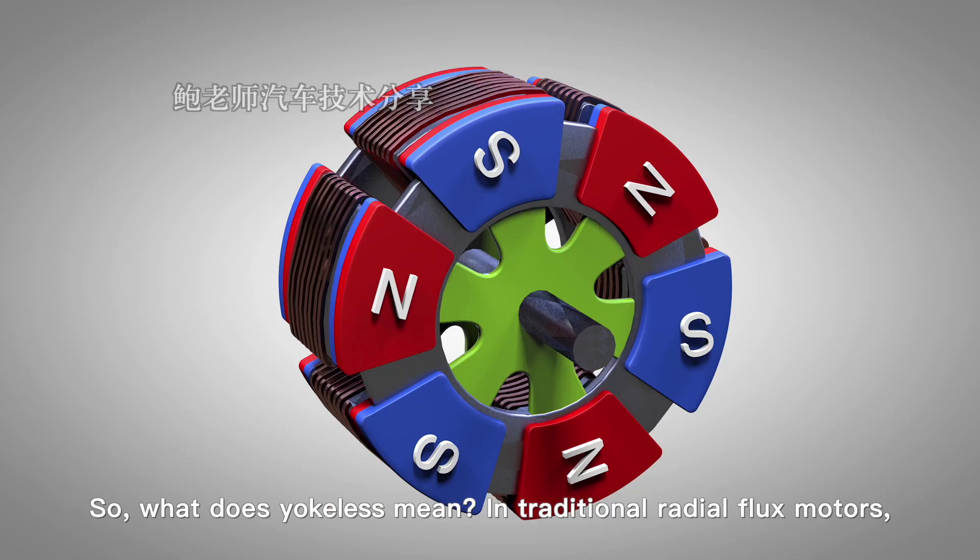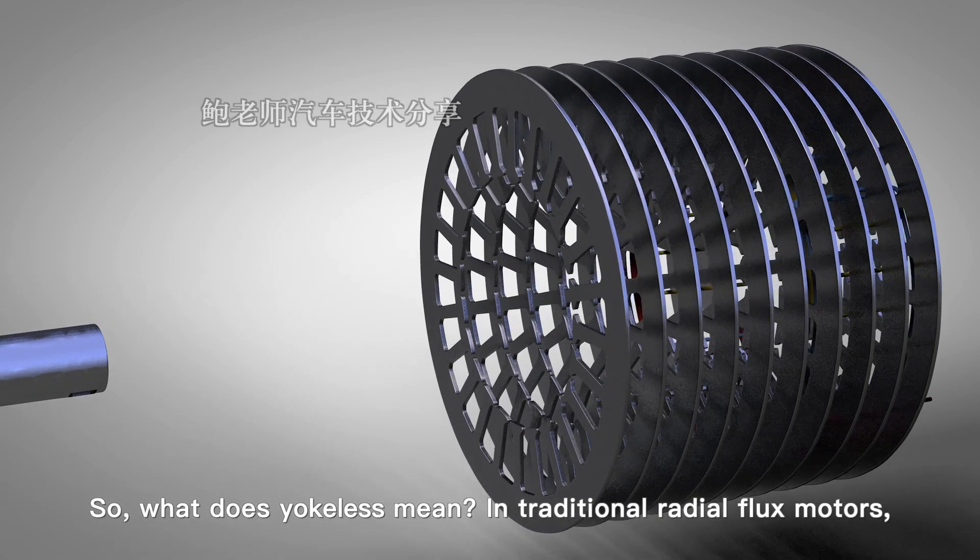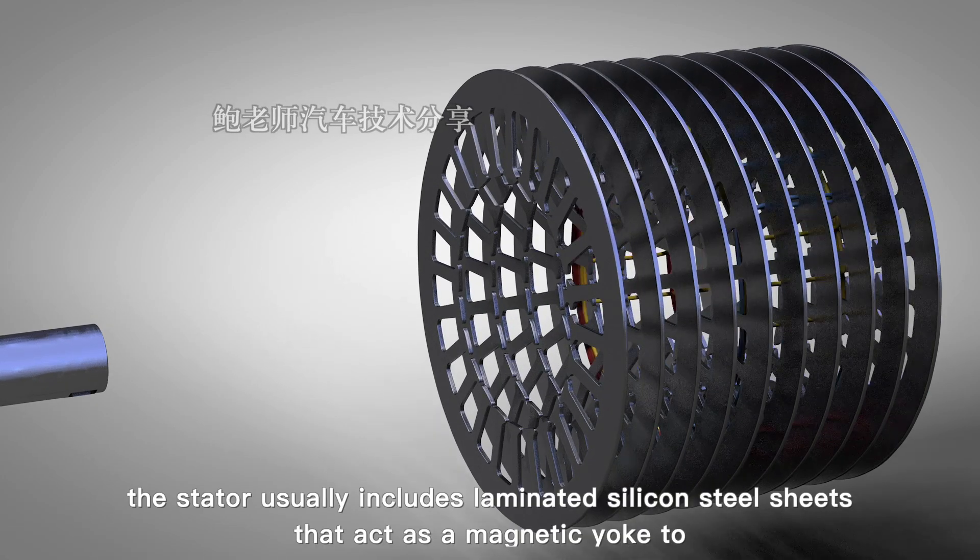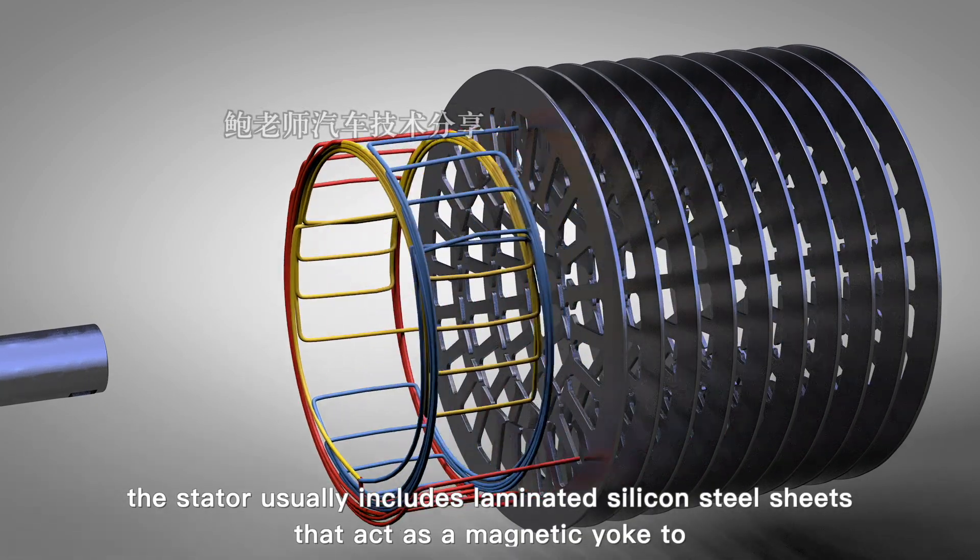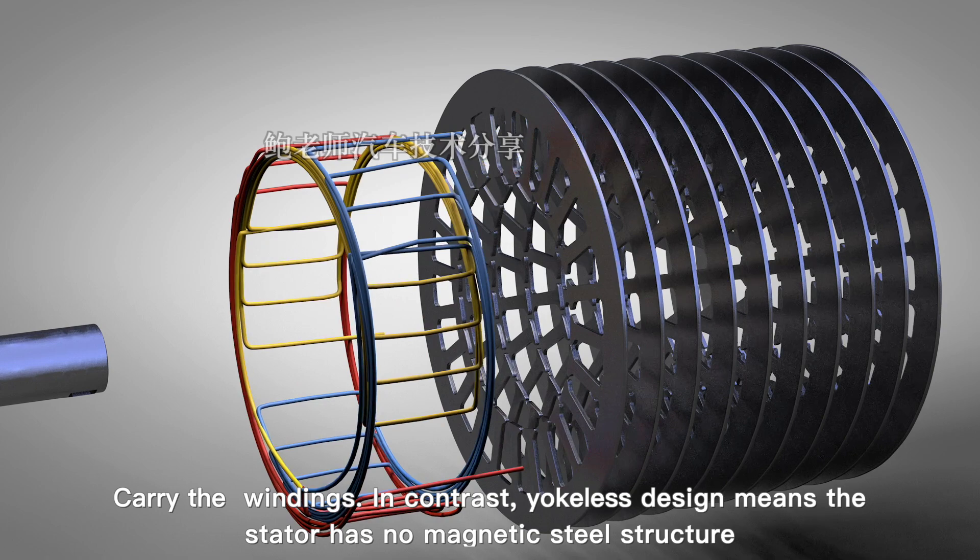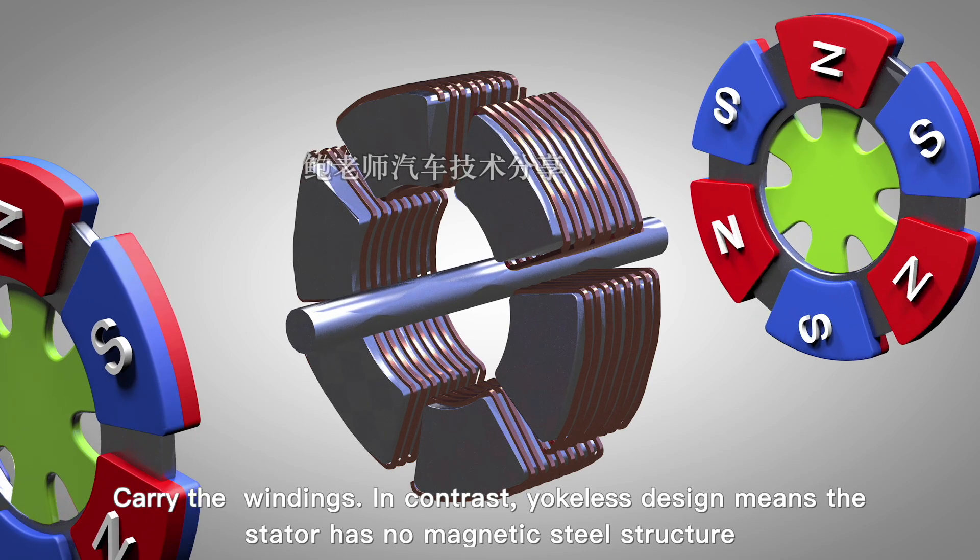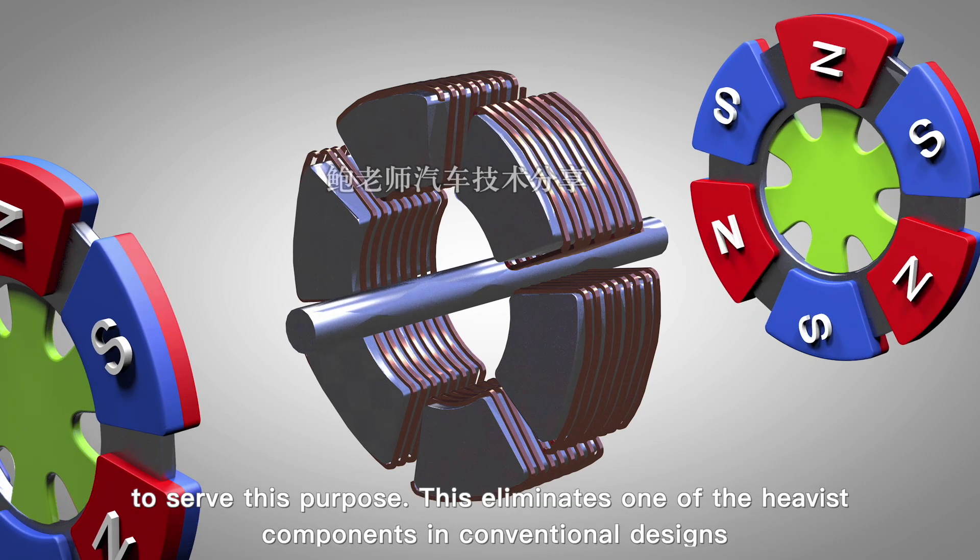What does yokeless mean? In traditional radial-flux motors, the stator usually includes laminated silicon steel sheets that act as a magnetic yoke to carry the windings. In contrast, a yokeless design means the stator has no magnetic steel structure to serve this purpose.